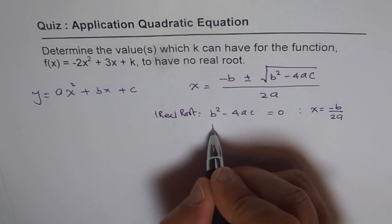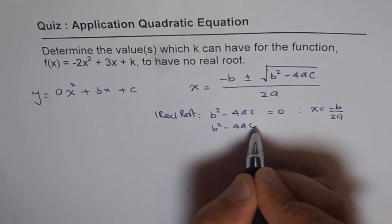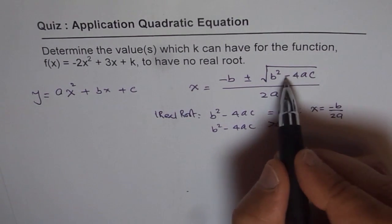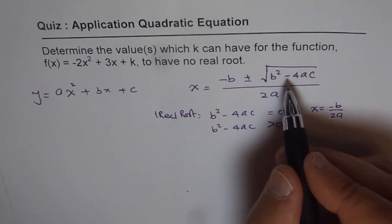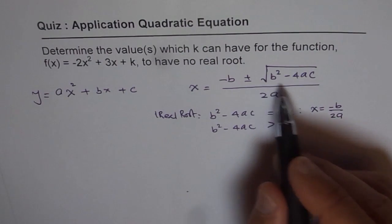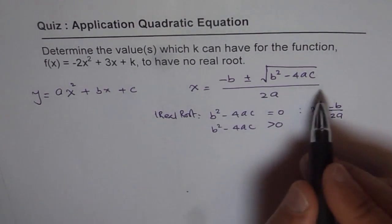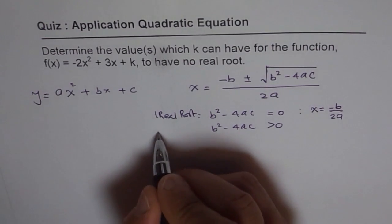But if b² - 4ac is greater than 0, that means this is positive, some real number. In that case, we get two roots, which is the whole formula. That gives us two real roots.